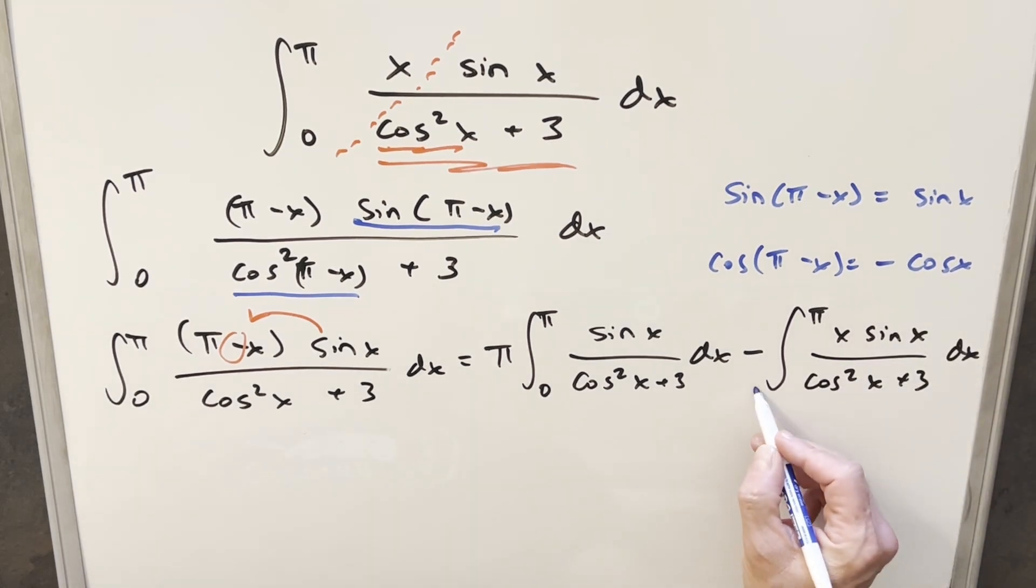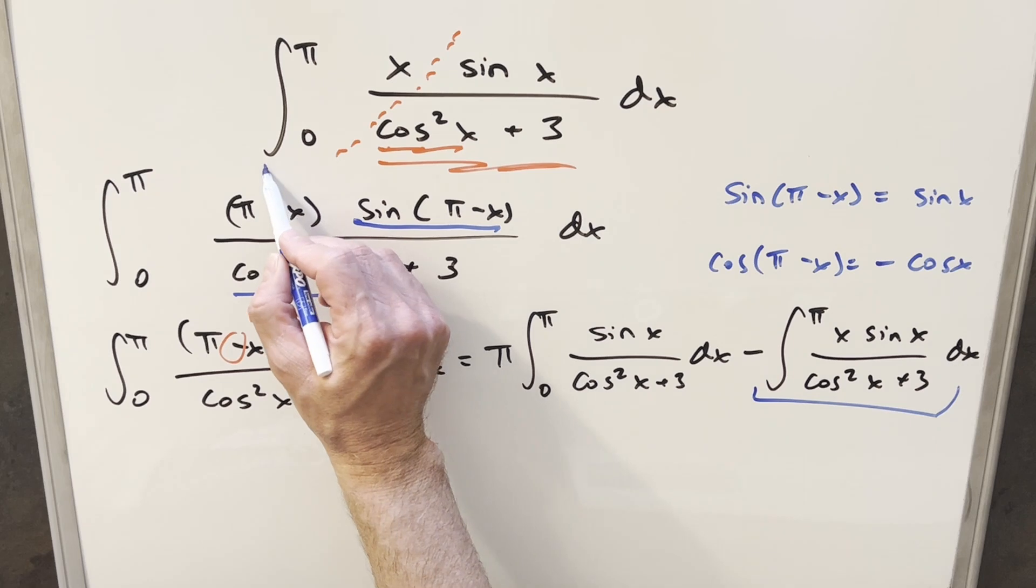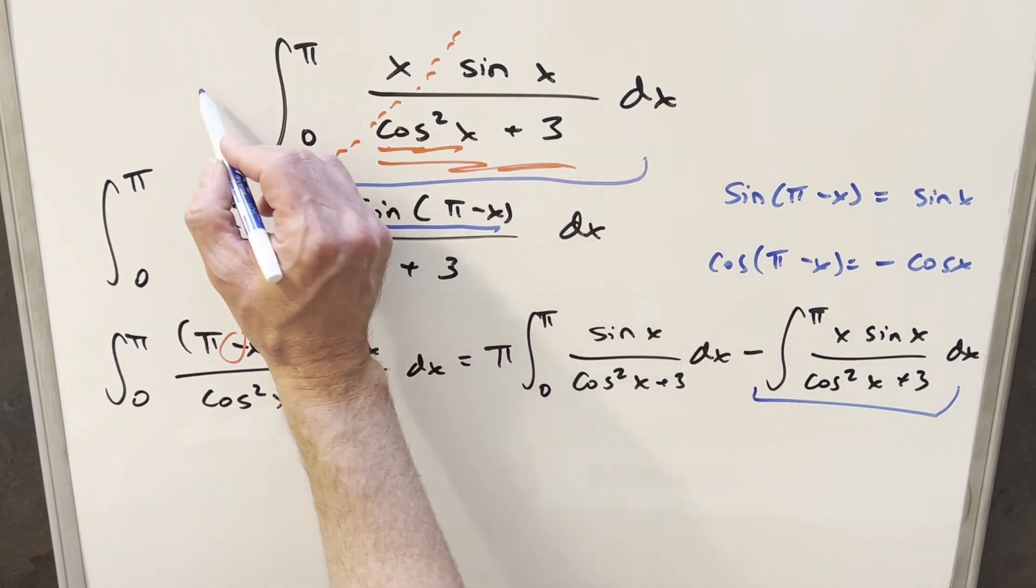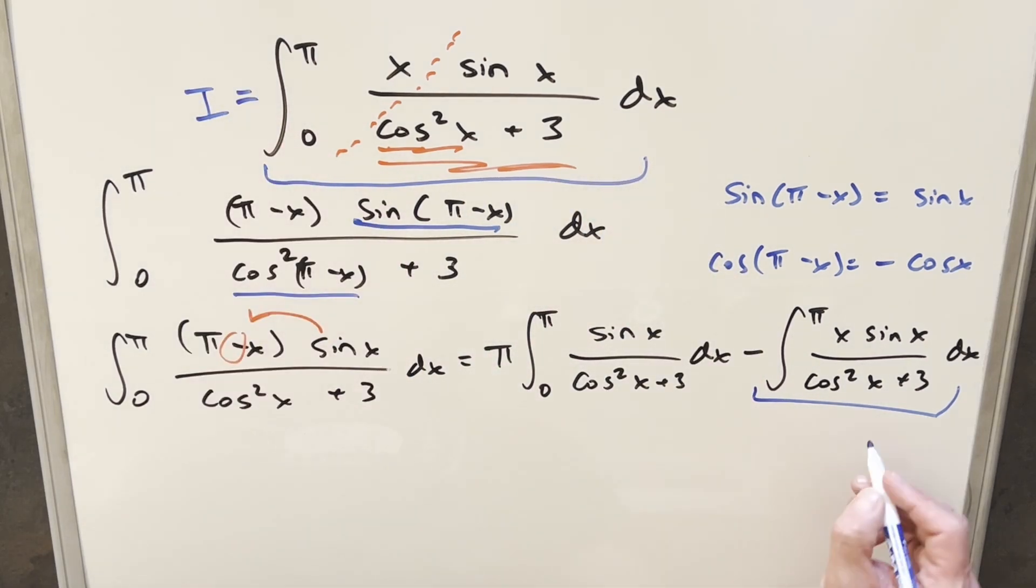And then what I notice at this point is that what we have here is exactly the same as our original integral. I can label our first integral as i, and so this here is also i. But let's leave this for a minute because we've eliminated the x from this expression. This here now has become that easy integral we talked about originally that we could do with a u-substitution.